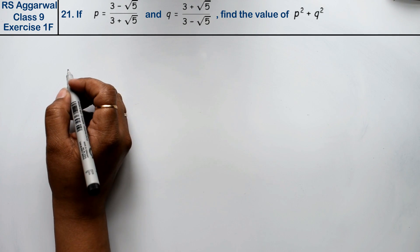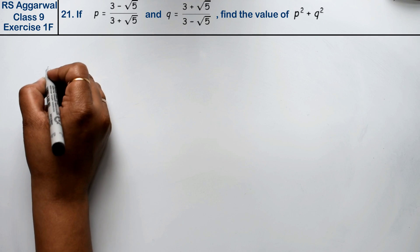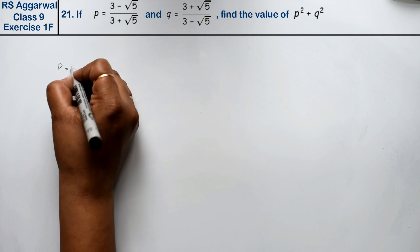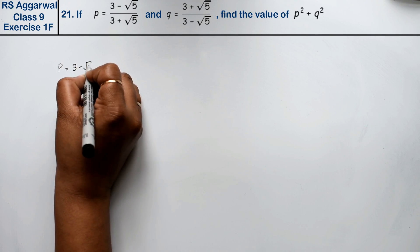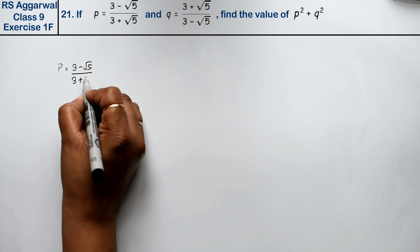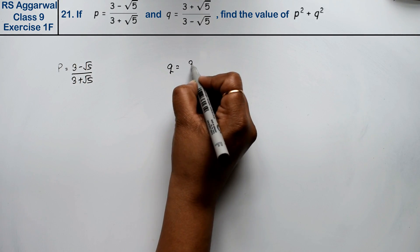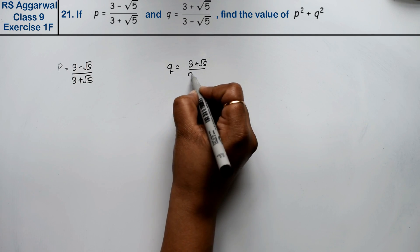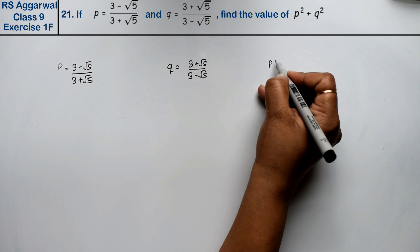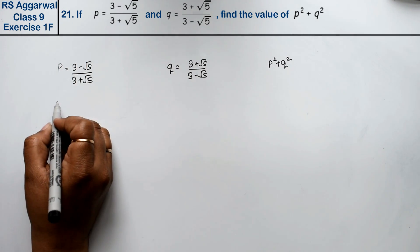Let's do question number 21 of exercise 1F, that is number system. Question number 21 is: If p equals 3 minus root 5 upon 3 plus root 5, and q equals 3 plus root 5 upon 3 minus root 5, find the value of p square plus q square.